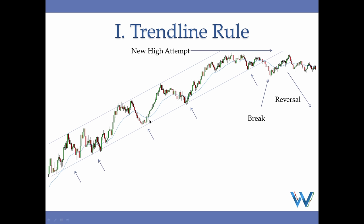We have a nicely fitting uptrend working higher with multiple confirmations indicating that this channel is valid. Following the trend line rule, I'm only focusing on long opportunities. Even when I have a break of this channel, that doesn't indicate reversal — that's against the trend line rule. I expect price to create a new high. Price created a new high, forming a double top which is close enough to be considered a new high. After that, price slowly consolidated and there was eventually a downtrend, but only after a new high was formed — then you can start acting accordingly.